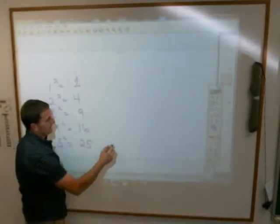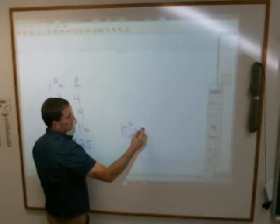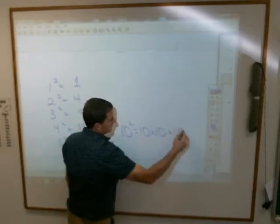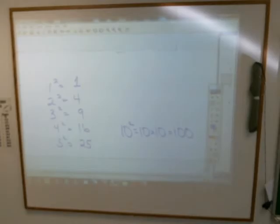What is 10 squared? 10 times 10? 10 times 10 is 100.